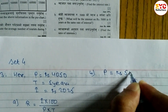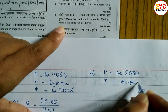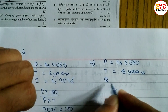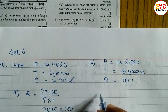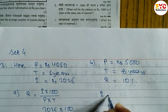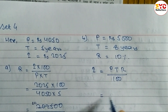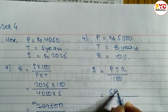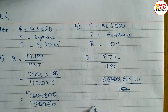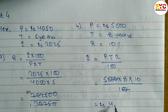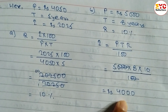P is equal to rupees 5,000. Time is equal to 8 years at the same rate of interest - rate of interest use karenge 10%. What will be the interest? Formula: I = PTR divided by 100. P value is 5,000, time 8 years, rate 10%, divided by 100. Cancel zeros - interest is equal to rupees 4,000.